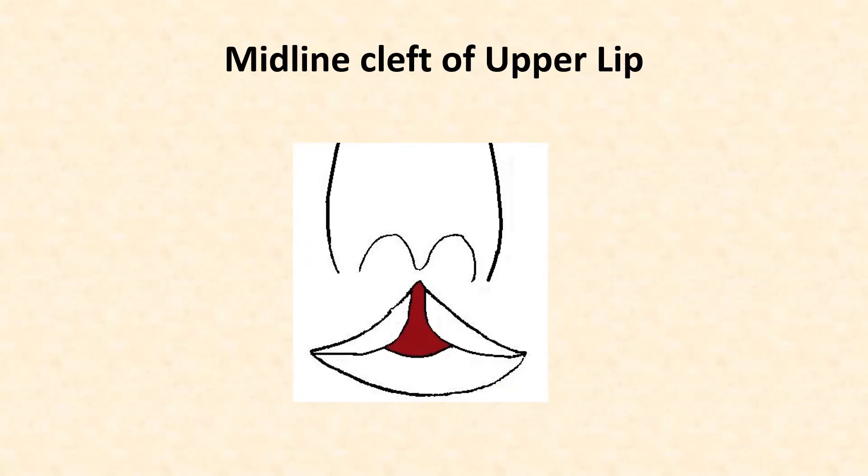Babies who have a cleft lip experience feeding difficulties — milk may come out of the baby's nose — and their teeth may also be missing. It is an important congenital abnormality that may be unilateral, bilateral, or present as a midline cleft. It often requires surgical correction.